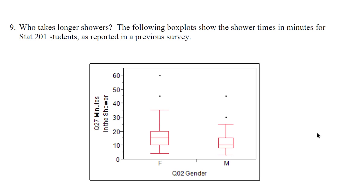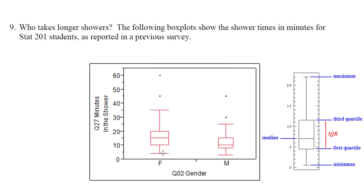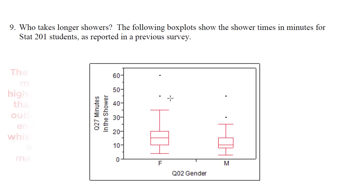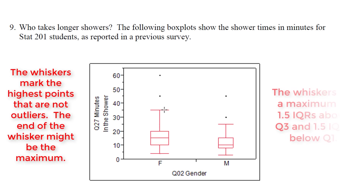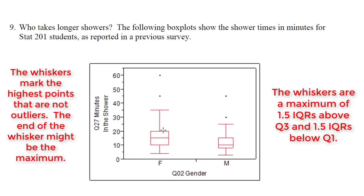Going through the box plot, we have the five-number summary. The minimum is the lowest point. Q1 is the 25th percentile. The median is the line, which is the 50th percentile. Q3, the end of the box, is the 75th percentile. Then we have the maximum, which is the highest point. The whisker on the box plot marks the end of normal data, which could be the min or the max — but in our instance, the max is not the end of the whisker.